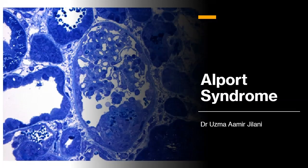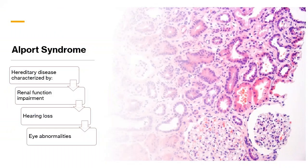Greetings. In this video I will talk about Alport syndrome, its clinical features and management. There are many other names for Alport syndrome such as congenital hereditary hematuria, hematuria nephropathy deafness syndrome, hematuric hereditary nephritis, hemorrhagic familial nephritis, and hereditary nephritis. Alport syndrome is a hereditary disease characterized by renal function impairment, hearing loss, and eye abnormalities.